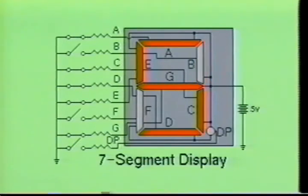To display decimal number four, segments B, C, E, and G must be activated. Decimal number five is displayed when segments A, C, D, E, and G are turned on.